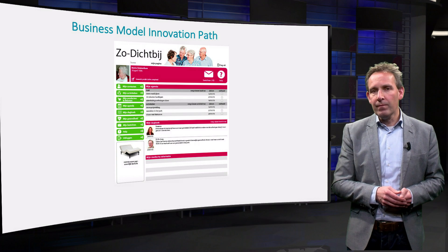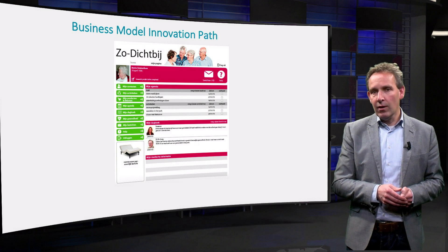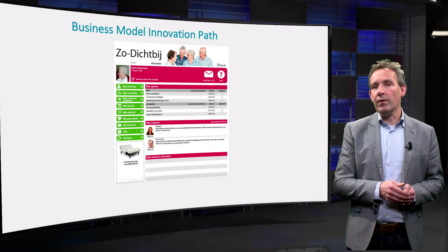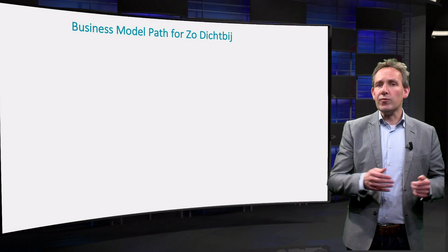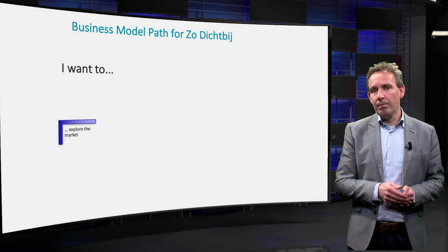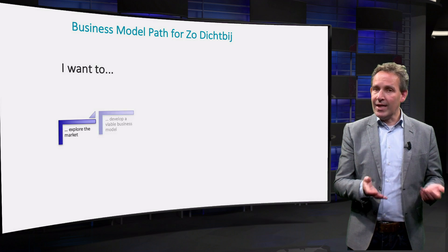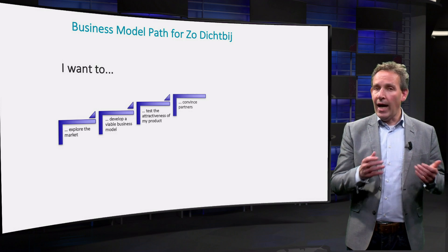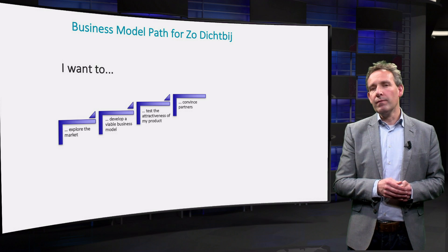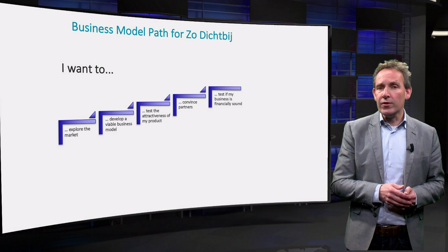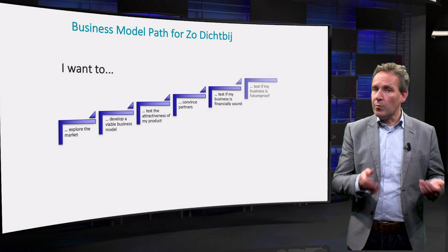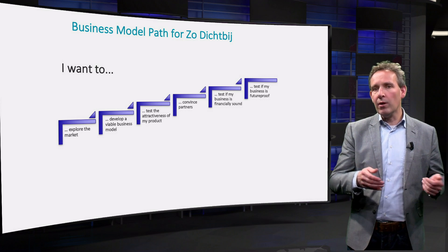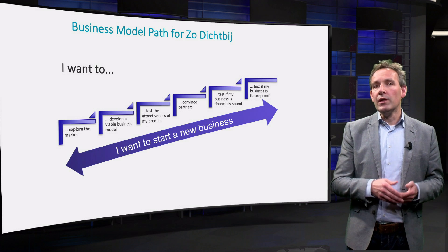Let's look at an example. Start-up company ZoDichtBij in the Netherlands wanted to start a new business with a matchmaking platform in elderly care. What path did they follow? First, it wanted to explore the market for matchmaking platforms in care, before it would develop the business model and test the attractiveness of the offering. Next, it wanted to find the right partners and arrangements, and wanted to determine which revenue models are viable. Finally, the start-up wanted to know if its business model is future-proof, and to make adjustments if necessary. Together, these six 'I want to's form a business model innovation path for the 'I want to start a new business' objective.